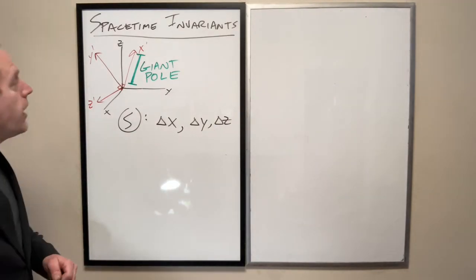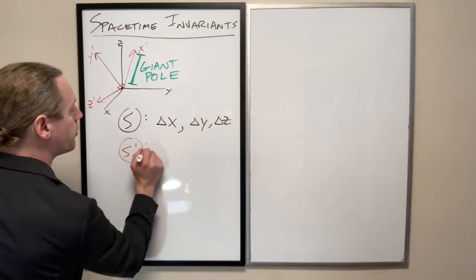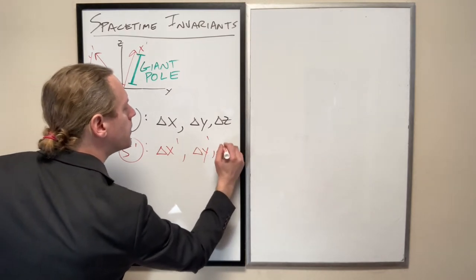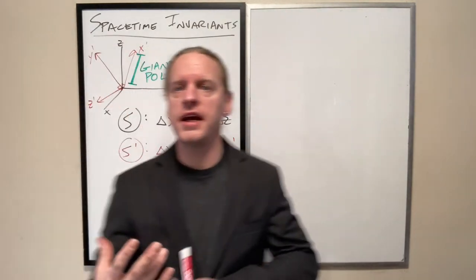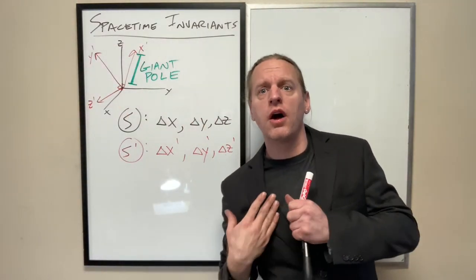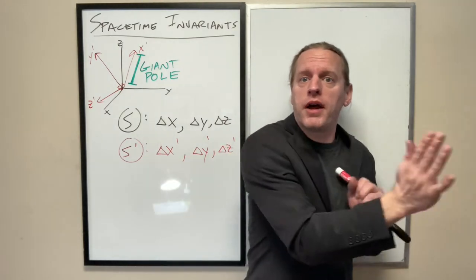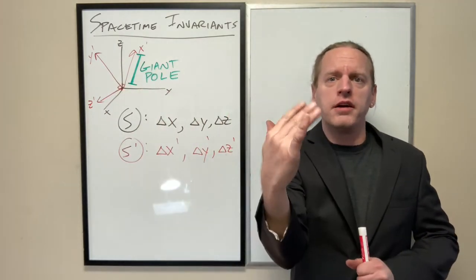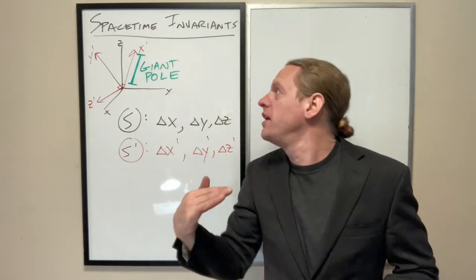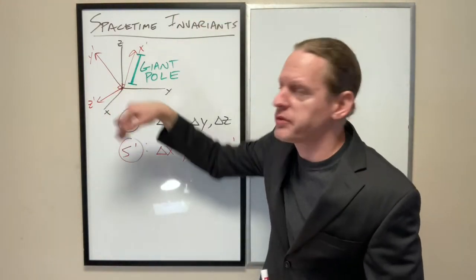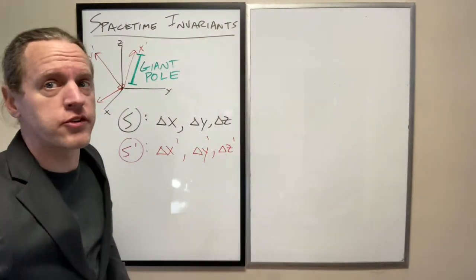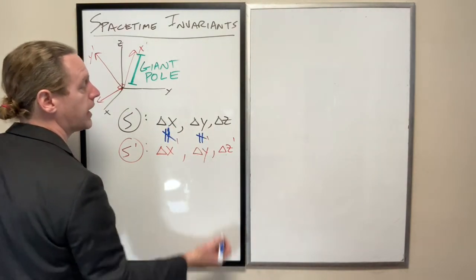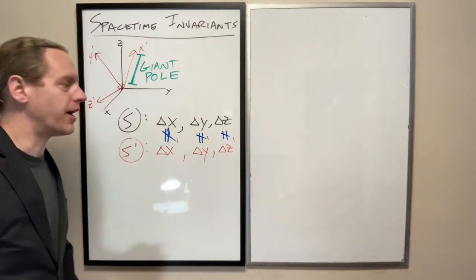Now in S prime, in the red frame, if they measured the extents along their axes, they're going to measure some value delta x prime, delta y prime, delta z prime. So they're going to tell how far that pole is oriented along their x prime axis, which is not necessarily the same as the normal x axis. So, the S observer is asking for x, how far does it go to the right? The S prime observer, when they ask x, how far is it going in this direction? These values will almost certainly not match.